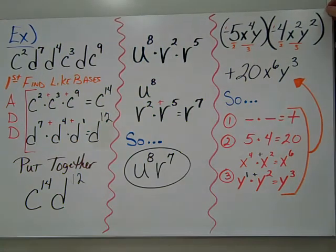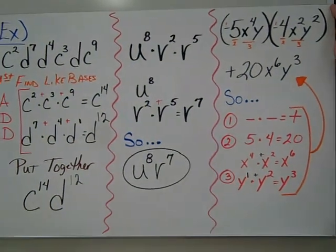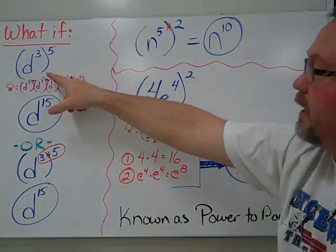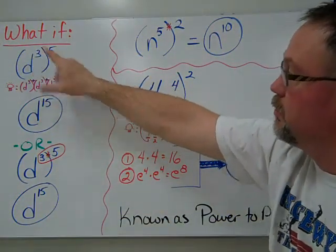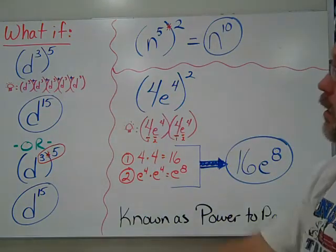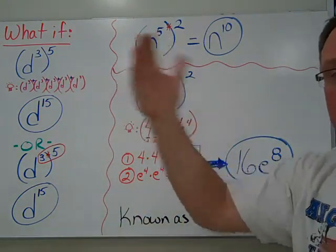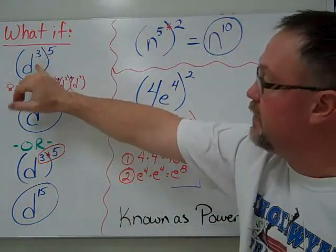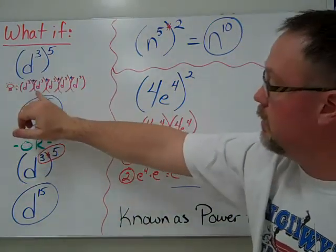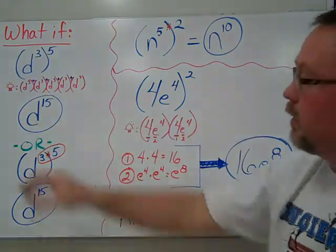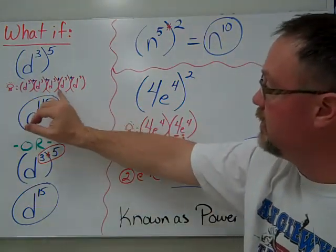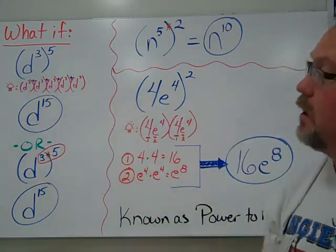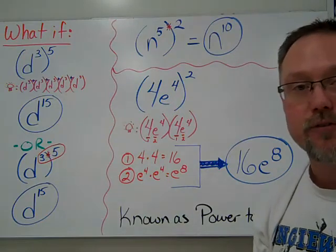What if something looks a little different — like d cubed to the fifth power? Now we have a power on the outside. The way to think about it: we have five d-cubeds. We write out five of them and add all the threes together — five groups of three gives us 15, so the answer is d to the 15th.